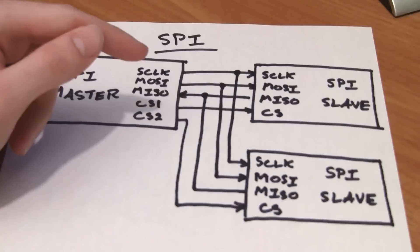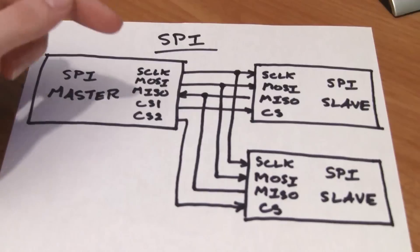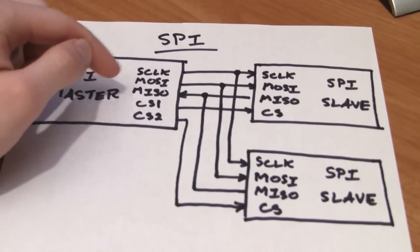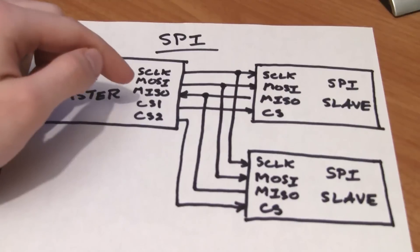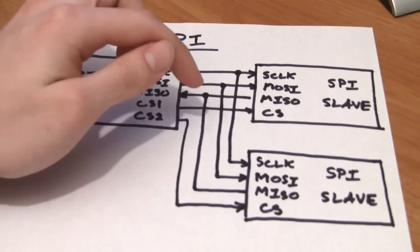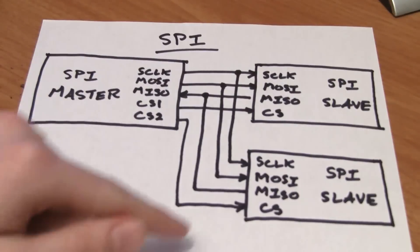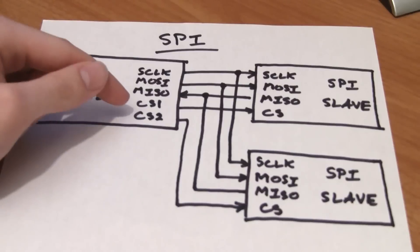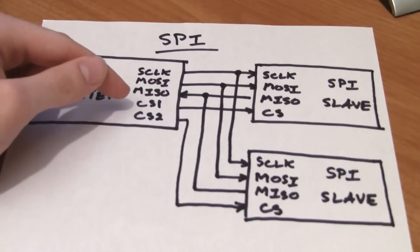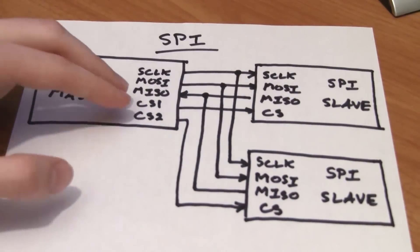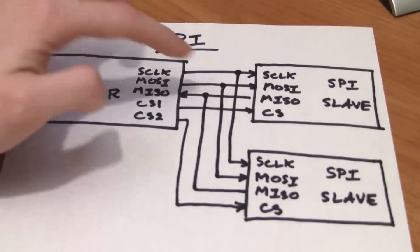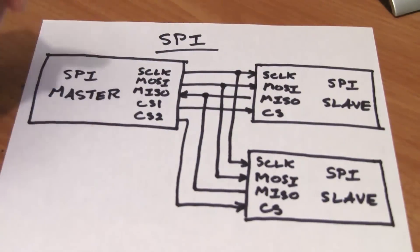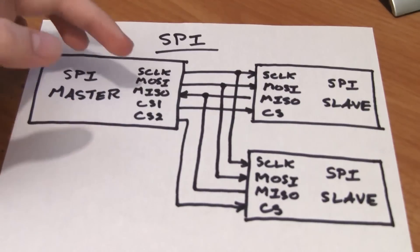Unlike I2C, where there's only one data line, here data can be transmitted in both directions, enabling a higher throughput. MOSI, or master out slave in, goes from the master to the slave. And MISO, master in slave out, goes from the slaves to the master. You'll notice these lines can be shared and no pull-up resistors are needed, unlike the I2C bus. That's because we have a unique chip select line that allows us to figure out which slave we're talking to. You generally have one chip select for each slave, and you pull that chip select line low to enable controlling that slave. You should never have more than one chip select line pulled low at a time.